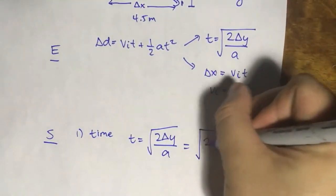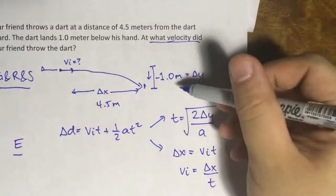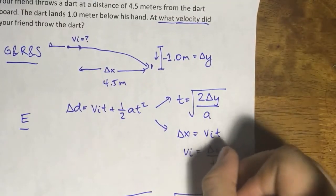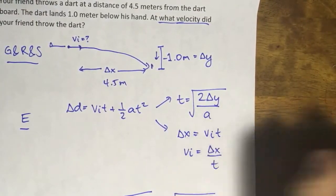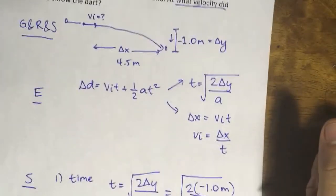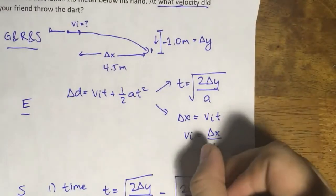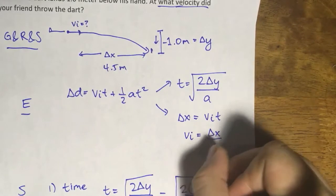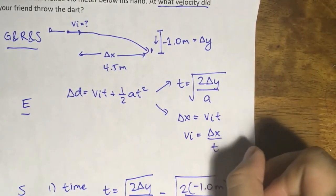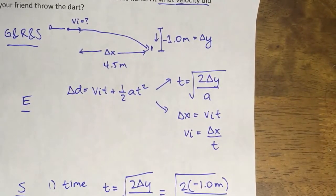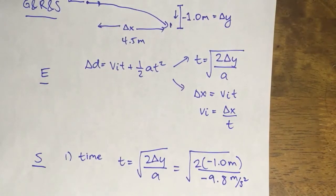Now, what do we have? 2 delta y is negative 1 meter. And at the bottom is a. A, as you know, is gravity: negative 9.8 meters per second squared. So let's run the calculations.